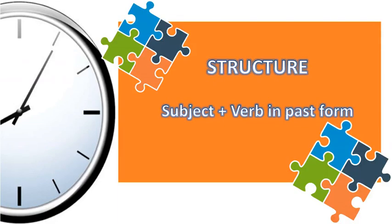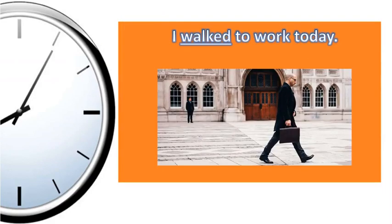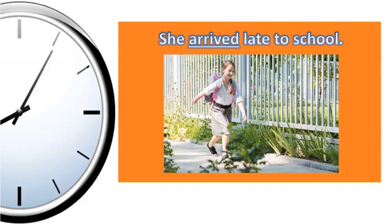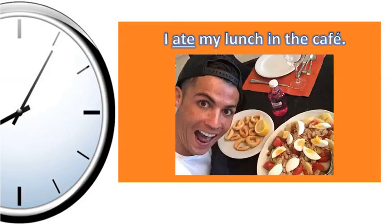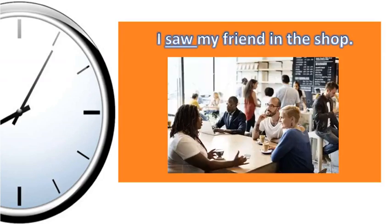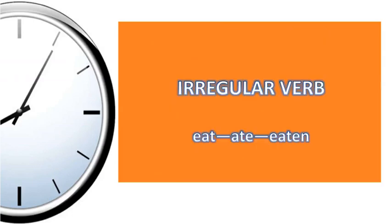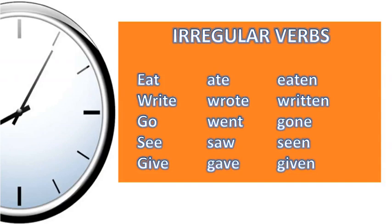For example: I ate my lunch in the cafe. I saw my friend in the shop. It's important to note that irregular verbs have different past forms. For example, eat becomes ate and eaten. There are many different types of irregular verbs, so make sure you know the past forms.